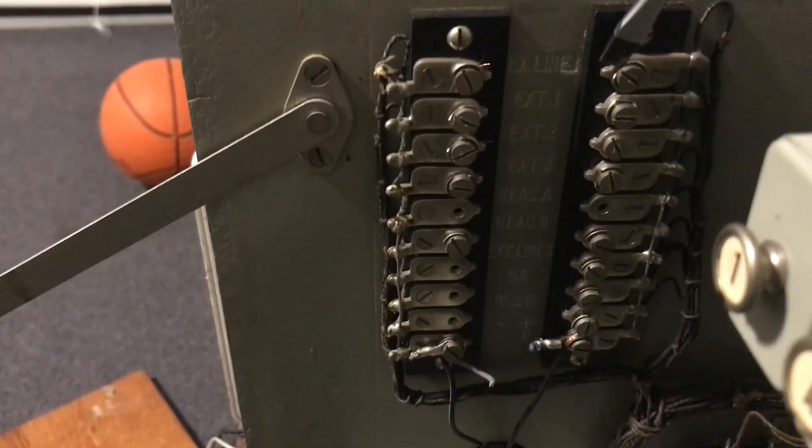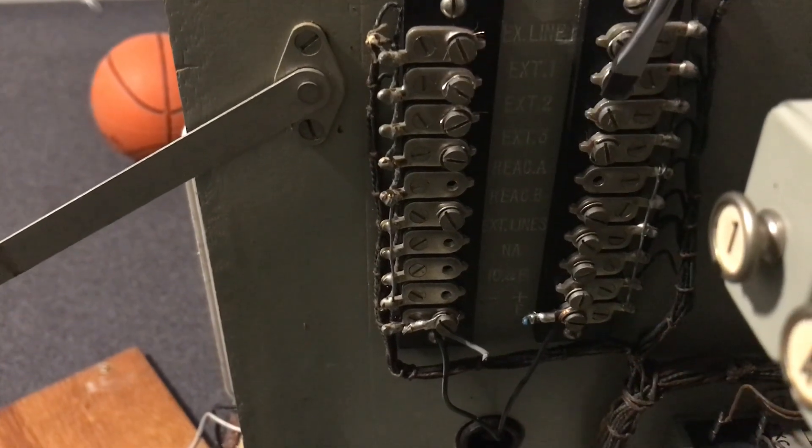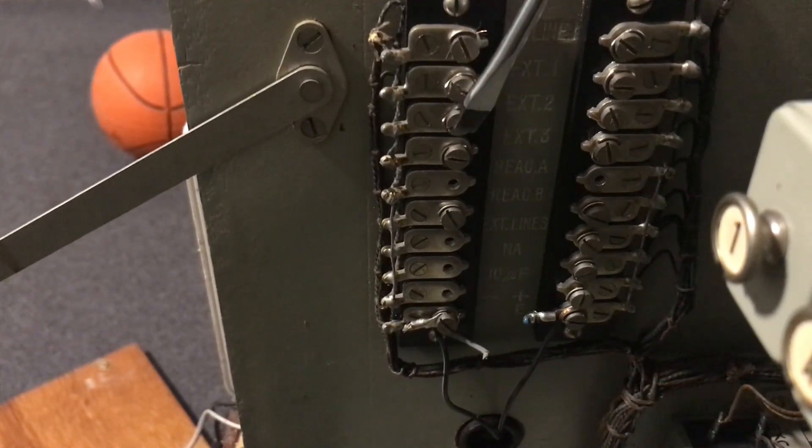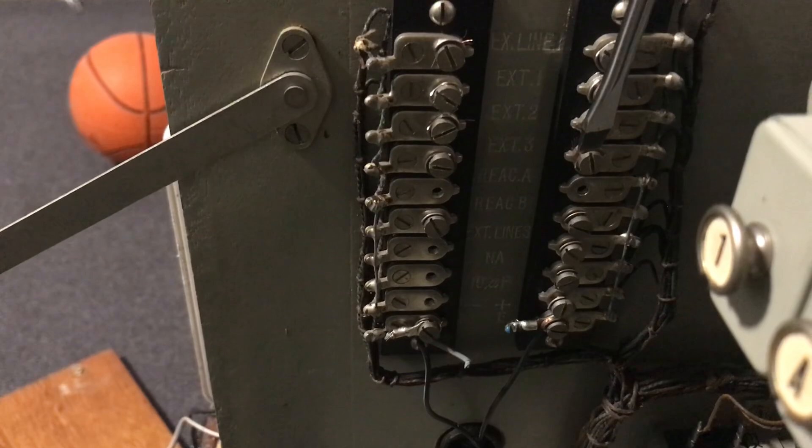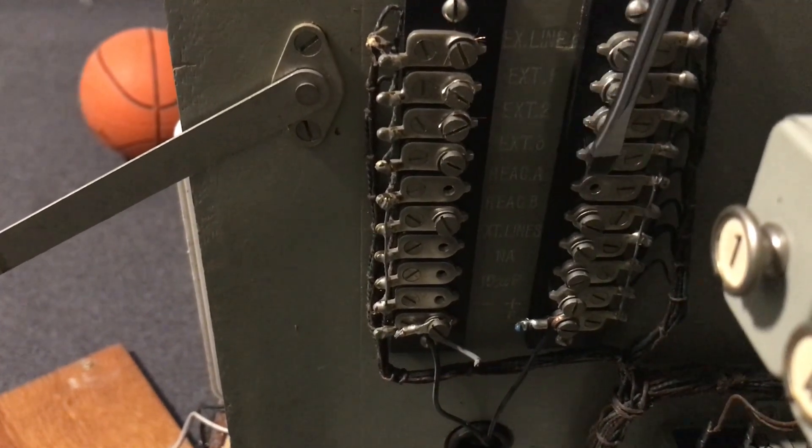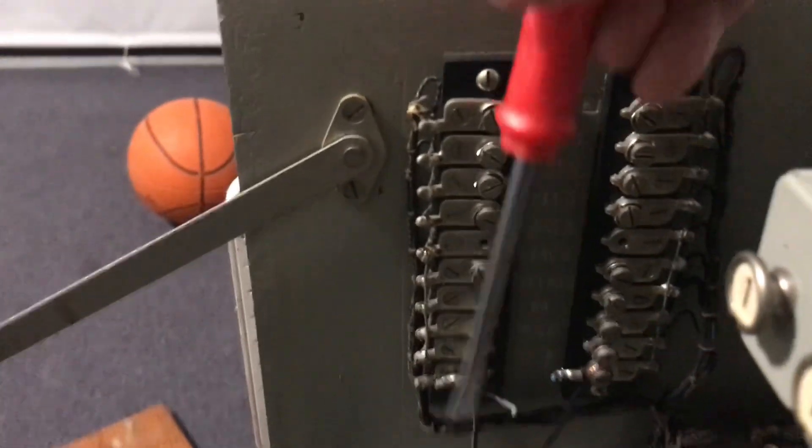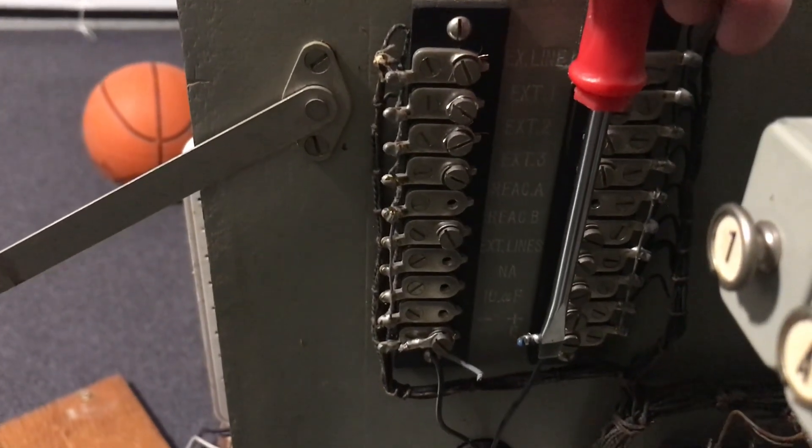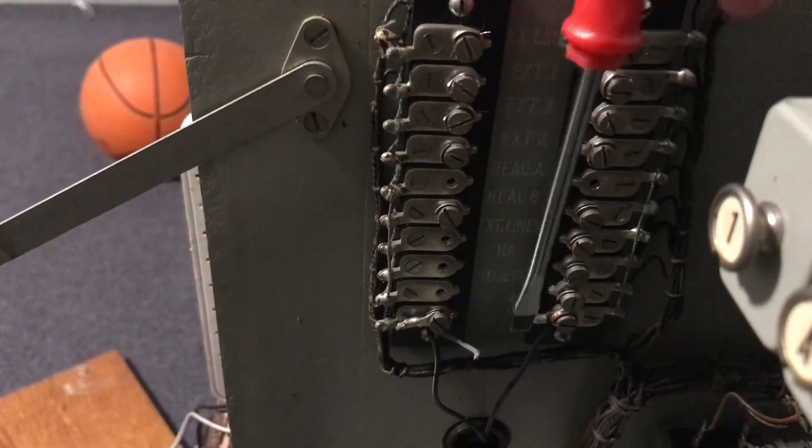So that's your exchange line. That one and that one is your line one for extension one. That's extension to the two, those two. That one and that one is extension three. And the bottom two is your 46 volt in, but you can use 40 volts and it will work. AC current.